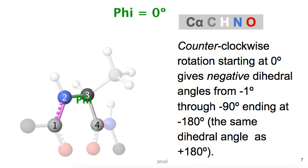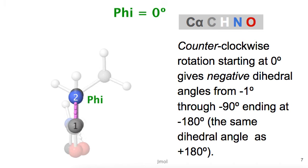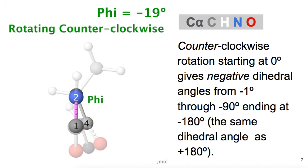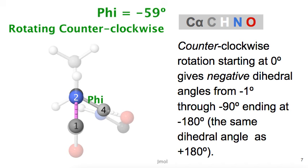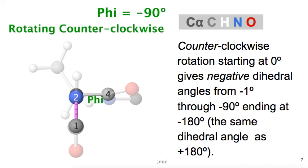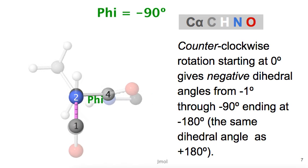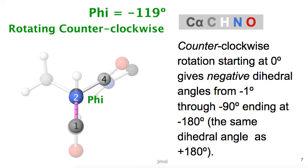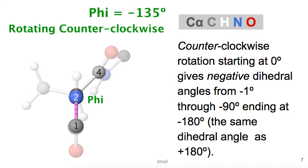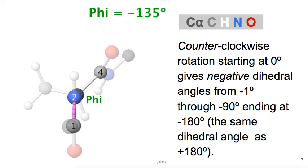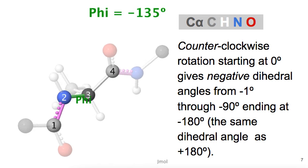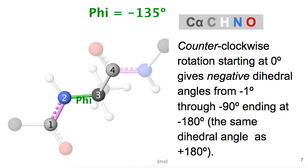If we rotate counterclockwise around the phi bond, by convention the angles are considered to be negative. Here we're pausing at minus 90 degrees. And we'll continue rotating up to minus 135 degrees. If we continued to minus 180 degrees, that would be the same as plus 180 degrees.